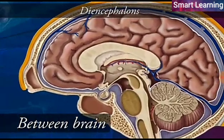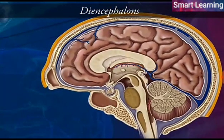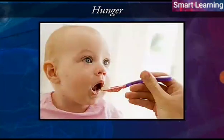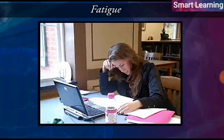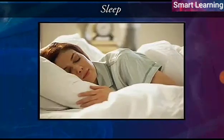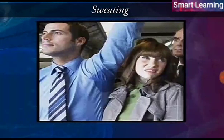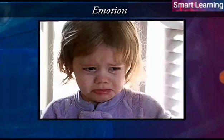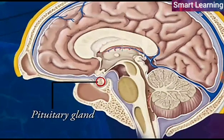The diencephalon is also called the between-brain or interbrain. It controls and maintains hunger, thirst, fatigue, sleep, body temperature, sweating, and emotions. It also secretes neurohormones which regulate the secretions of the pituitary gland.